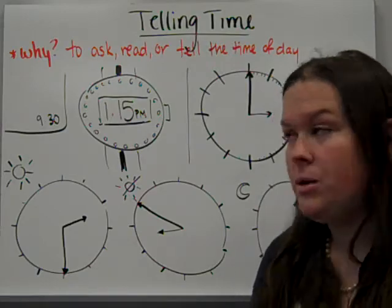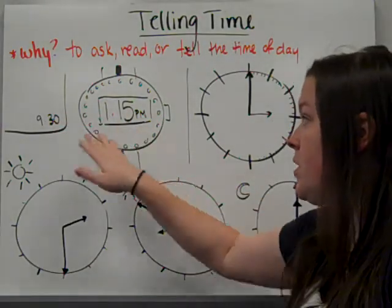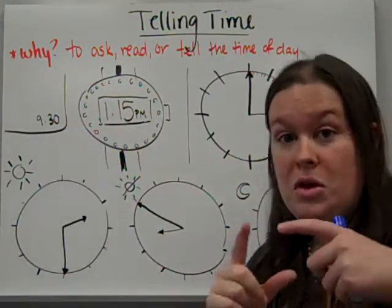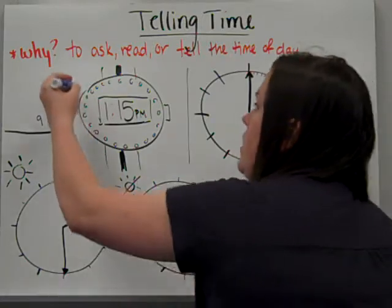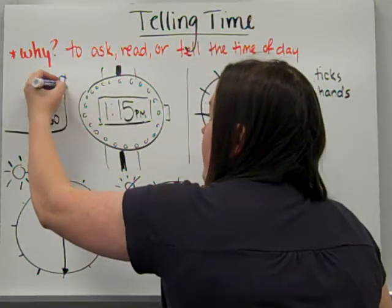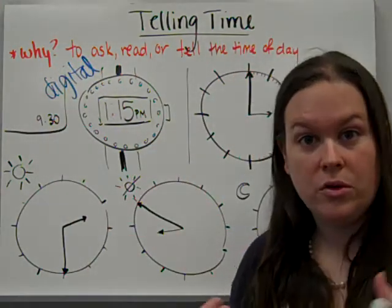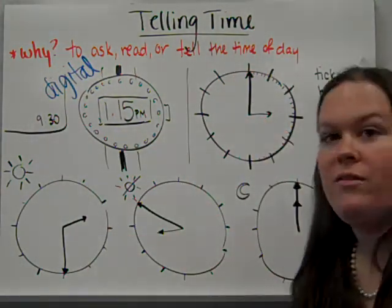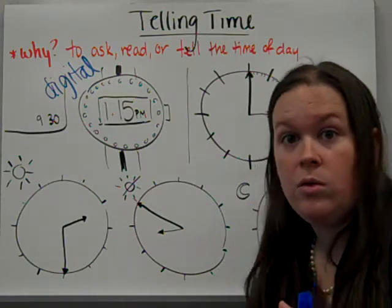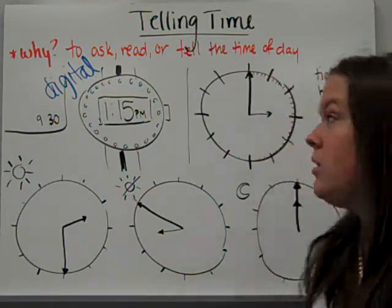There are two types of clocks mainly. There's the kind where you see a number and it just tells you. That is a digital clock. So this is digital numbers. The other clock where you have to actually look at it and count, this is called an analog clock.